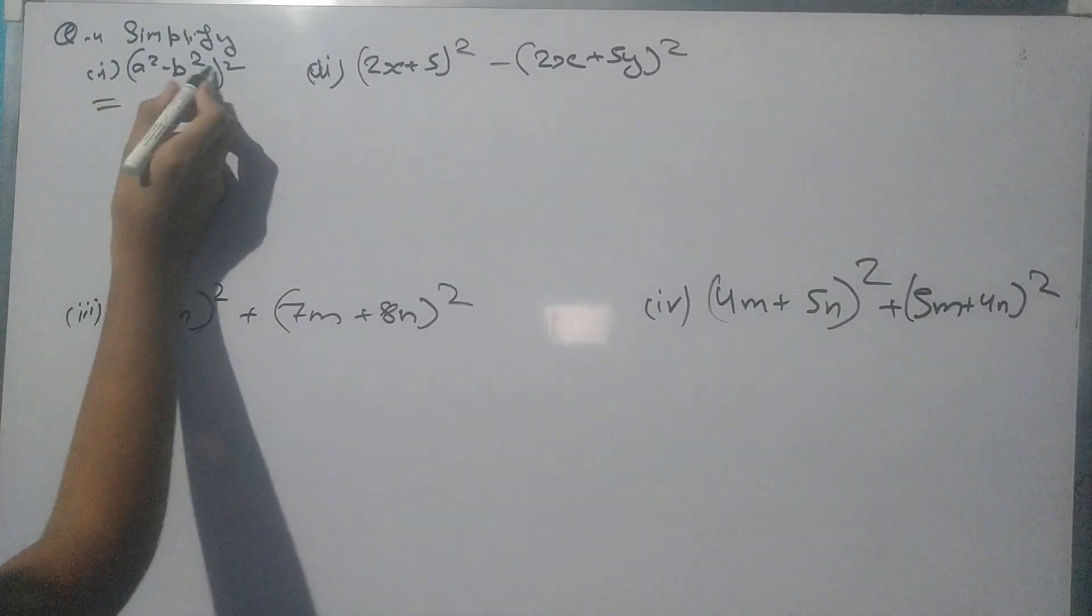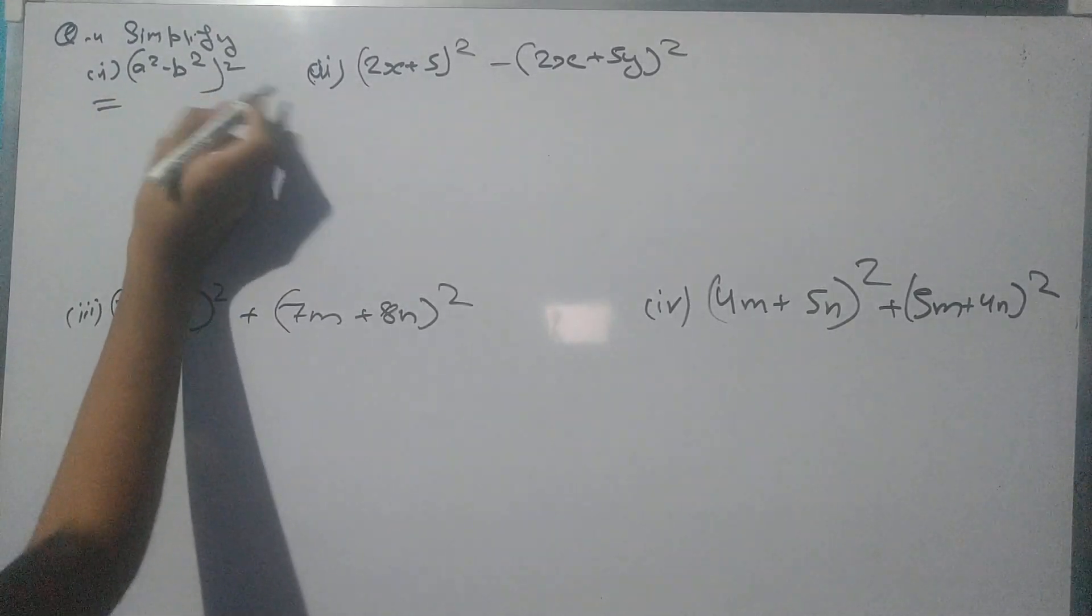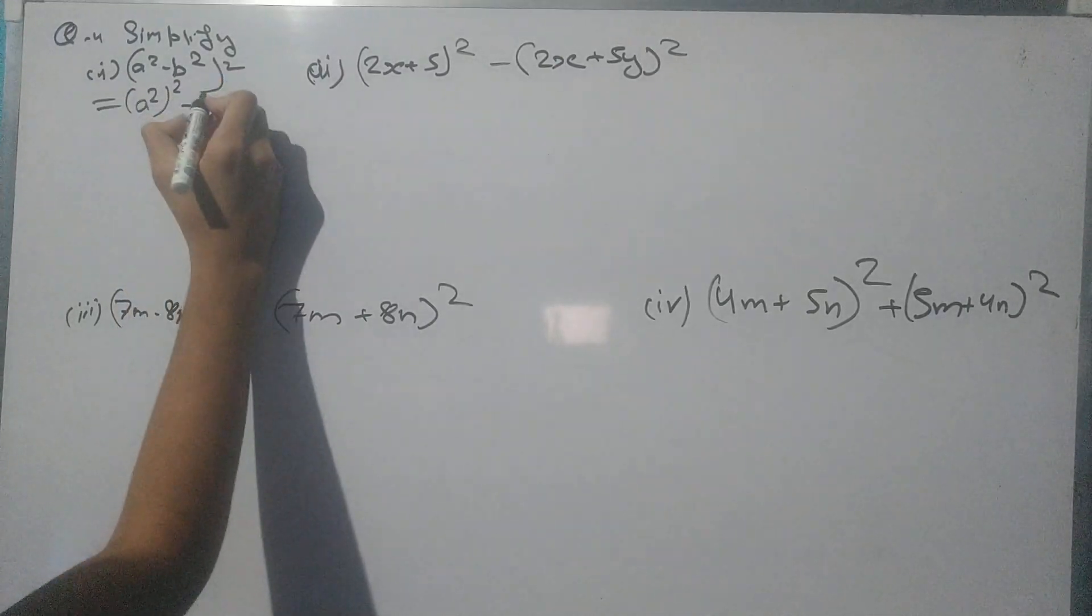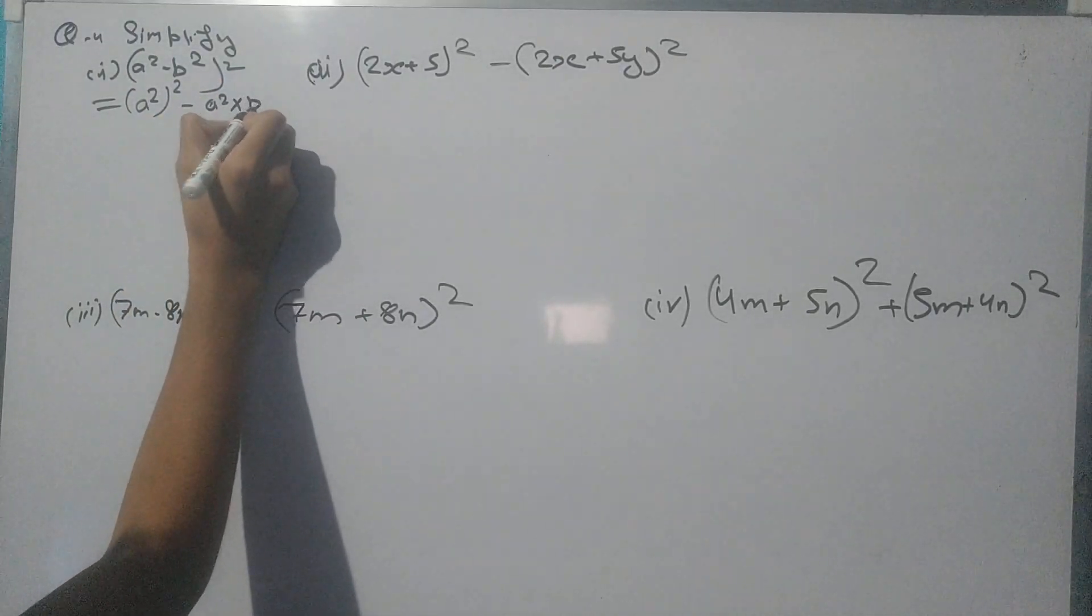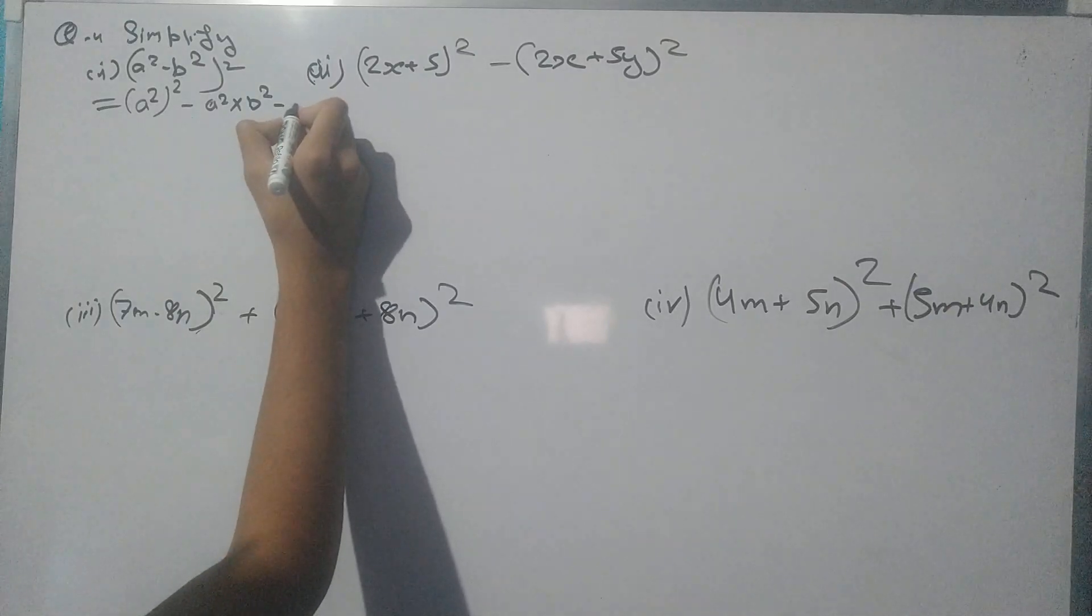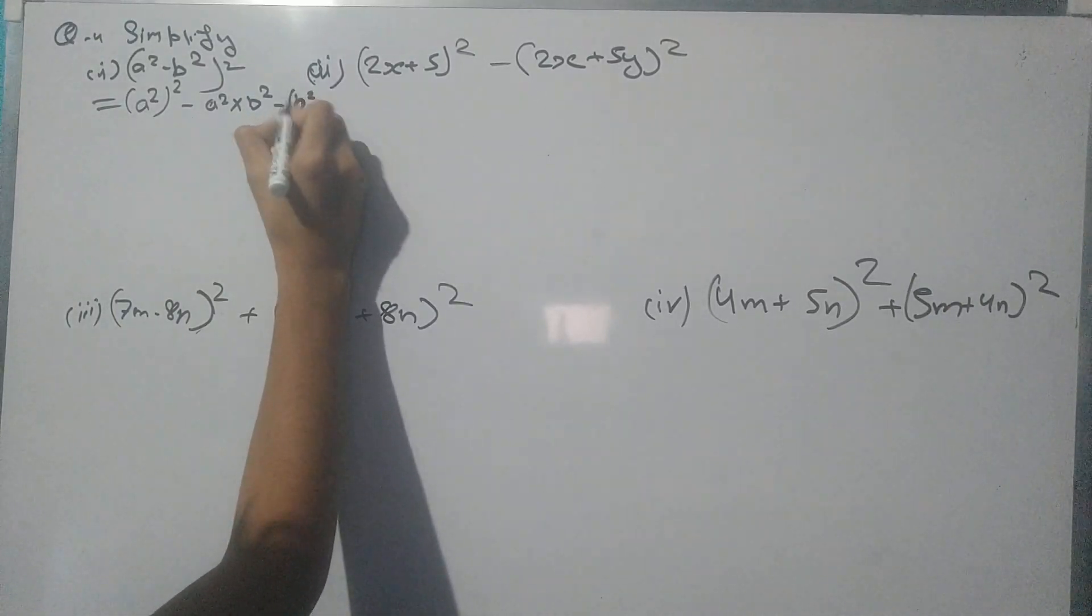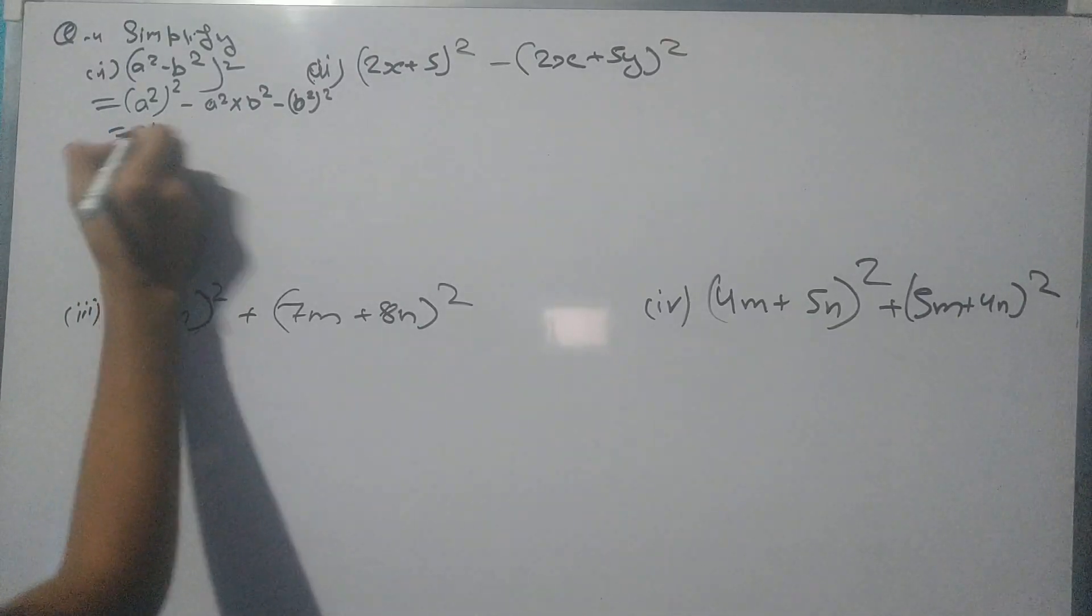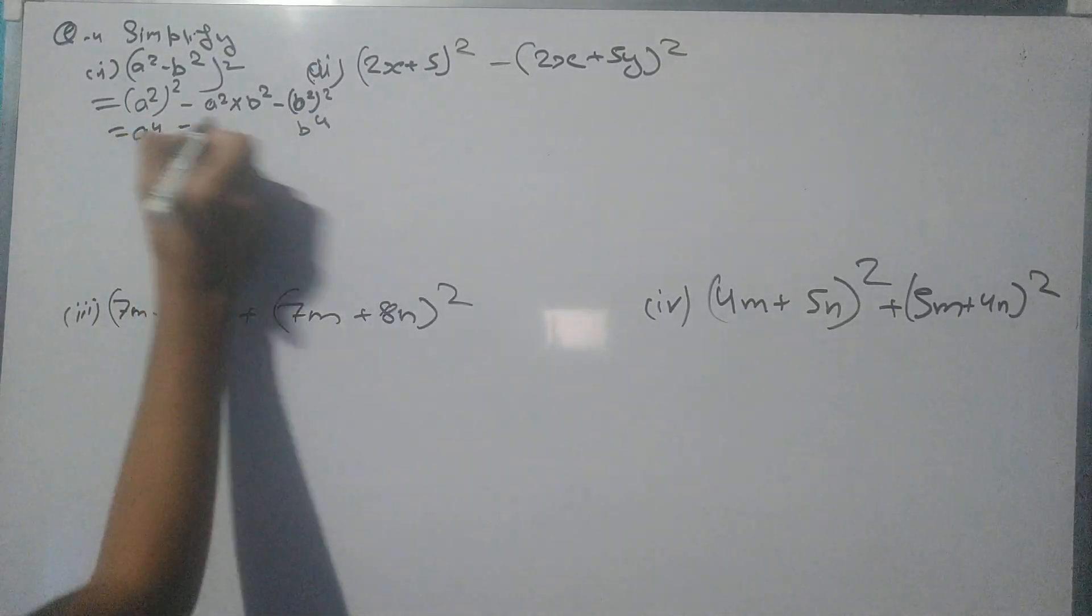In this we have got to simplify (a² - b²)². So a² in square minus a² by b² minus b² will be a raised to power 4, b raised to power 4, minus a² by b² minus b².